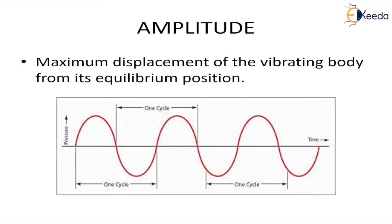Now what is the amplitude? This is the amplitude. The maximum displacement of a vibrating system from its mean or the equilibrium position. This is the amplitude, denoted by A. If we consider this as the mean position, this shows the maximum displacement.